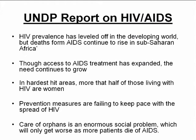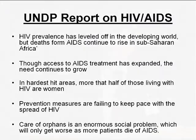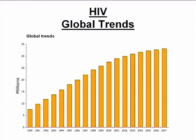In the hardest-hit areas, more than half of those living with HIV are women — a link into MDG3. Prevention measures are failing to keep pace with the spread of HIV, and orphans are an enormous social problem, which will only get worse as more patients die of AIDS. So, a mixed message, but if we look at a graph of global trends, it actually looks as though we're not doing too badly.